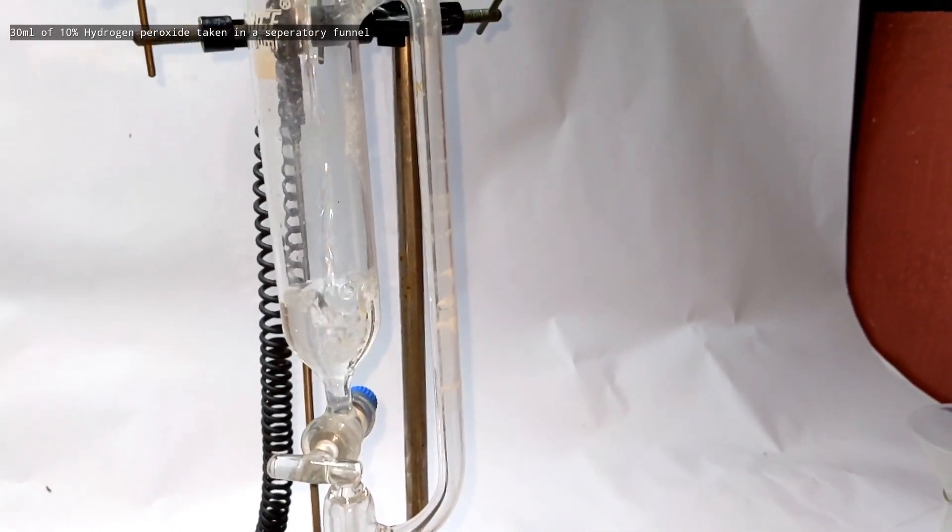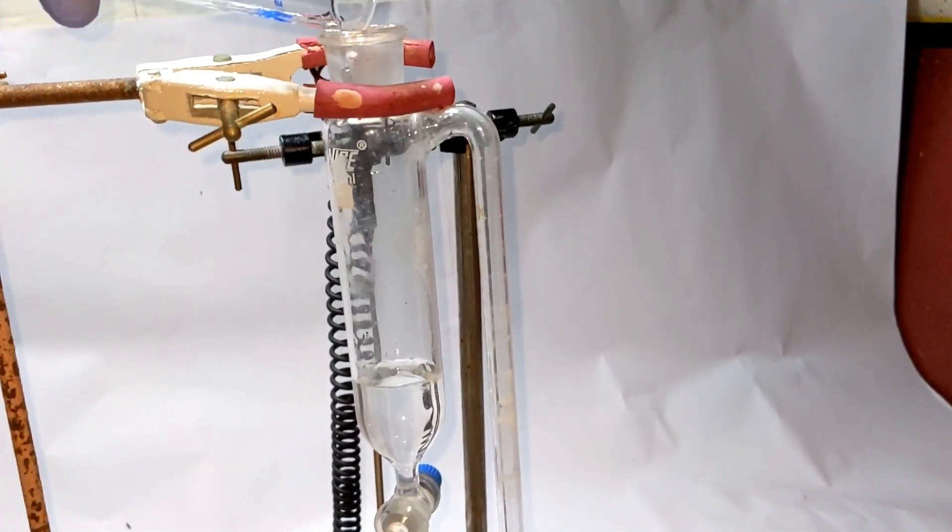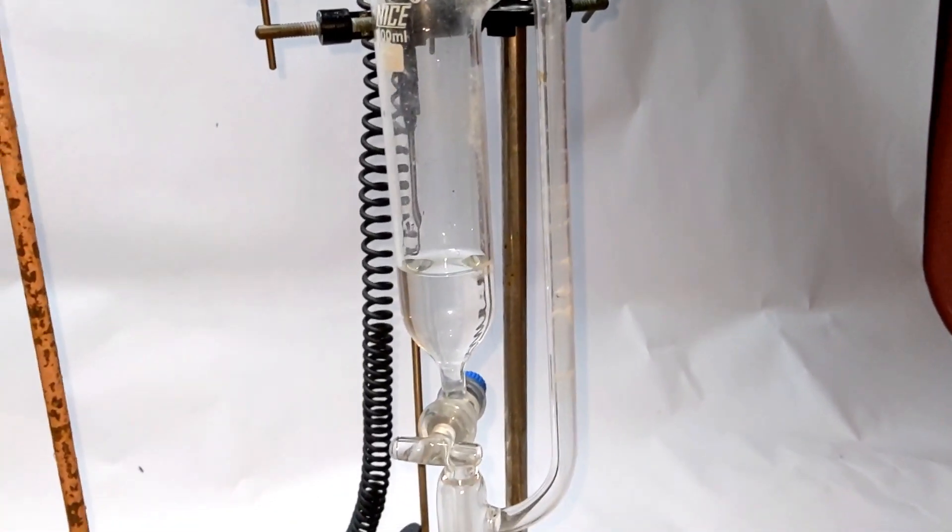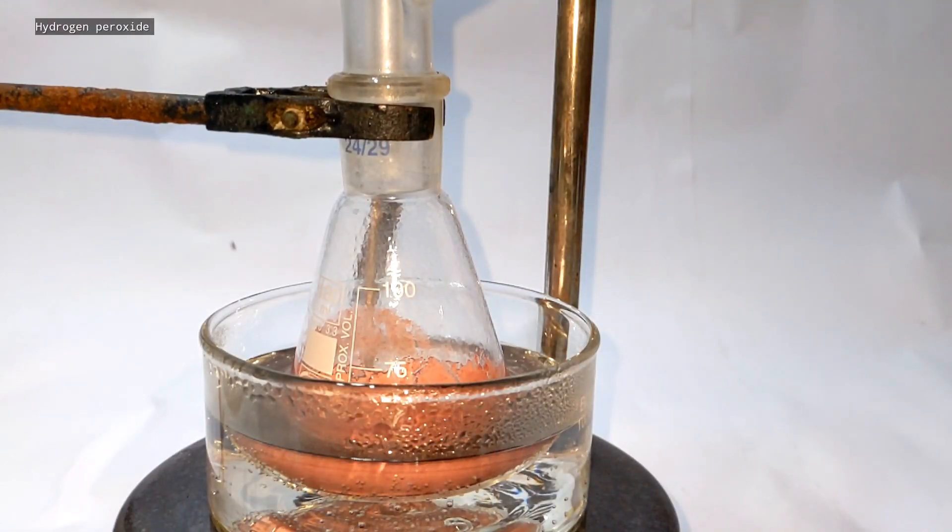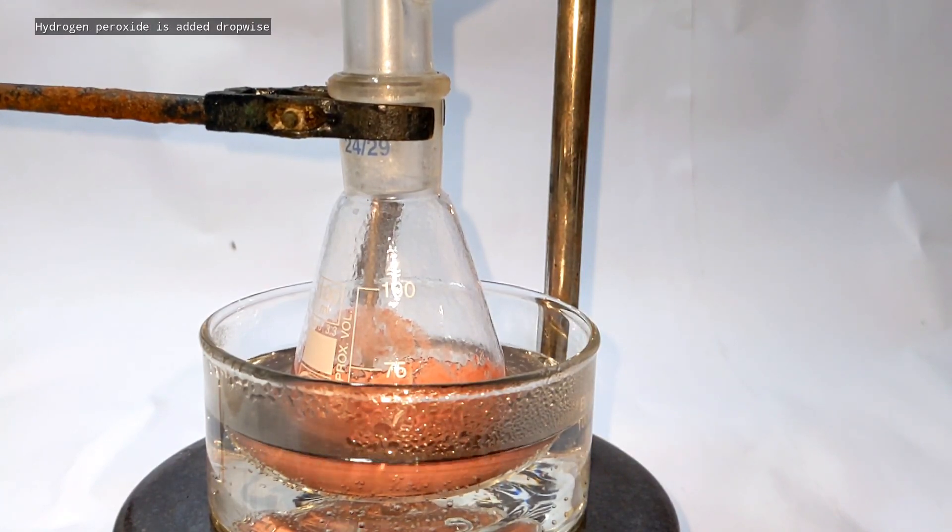30 milliliters of hydrogen peroxide solution was added to the pressure equalizing funnel. With simultaneous heating and stirring, hydrogen peroxide was allowed to fall into the mixture.